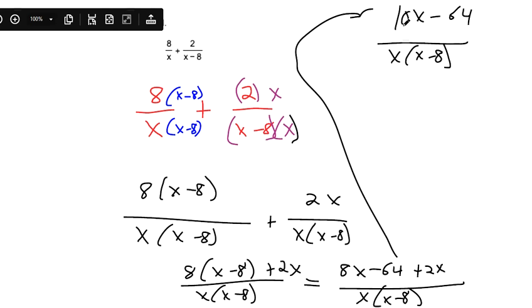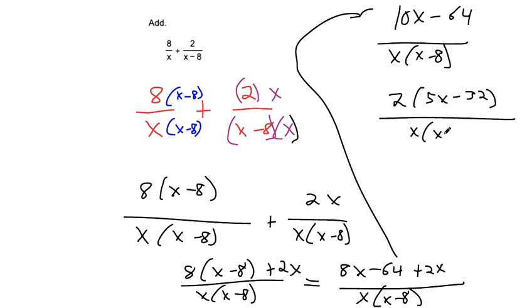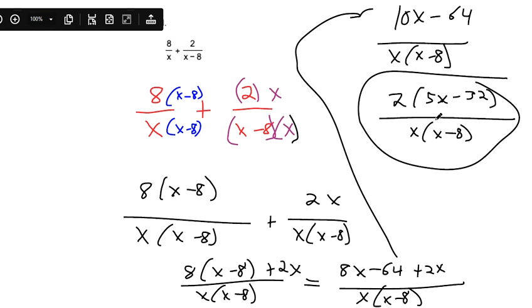And now the top can be factored a little bit but I don't think it's going to help us. So I think this should be our final answer. Because you could factor a 2 out of the top, I don't know if that's what MyMathLab is going to be looking for, but factoring the 2 doesn't make anything cancel out with the bottom. So maybe this one is the one they're going to prefer.